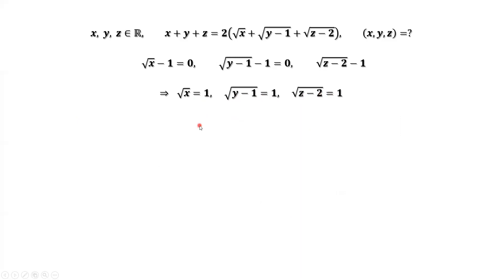Taking square on both sides for each result, then we have x equals 1, y minus 1 equals 1, z minus 2 equals 1. Therefore, we have x equals 1, y equals 1 plus 1, which is 2, z equals 1 plus 2, which is 3.